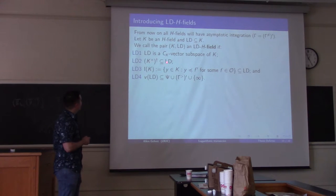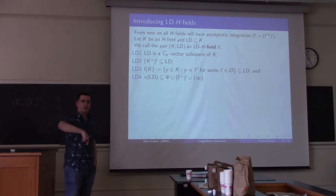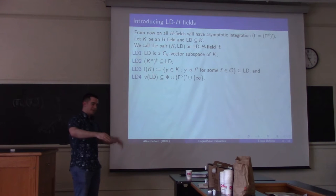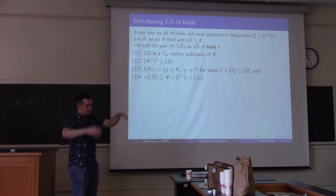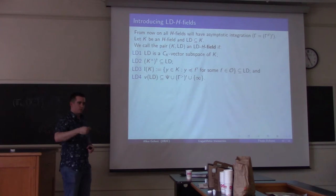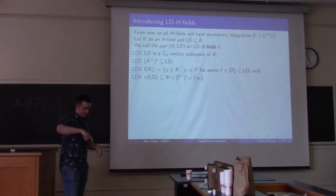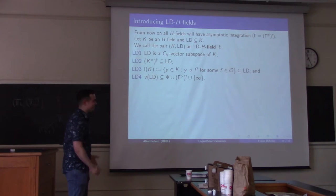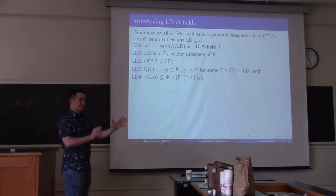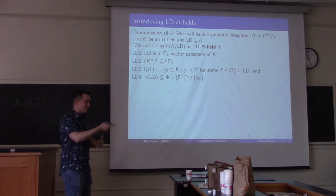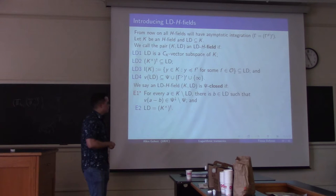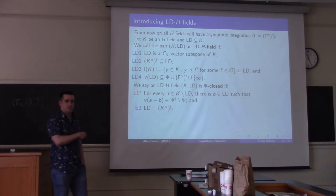The idea is that T-log will be an LDH field, but then we want substructures of that — subfields that we also want to be LDH fields. LD contains logarithmic derivatives but might possibly contain a little bit more. The LD set makes a promise that when this field grows up to be a model of our theory, everything in the LD set will one day become a logarithmic derivative of something. And everything not in the LD set — we're saying it will never be a logarithmic derivative. The LD set keeps track of what things will be allowed to be logarithmic derivatives and what things won't.